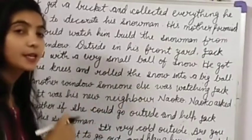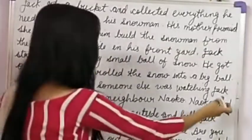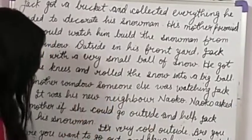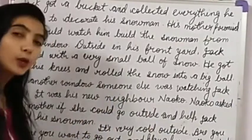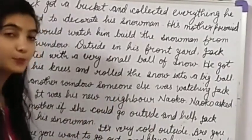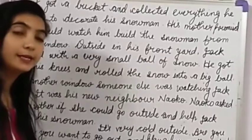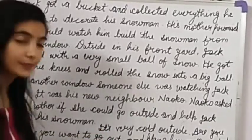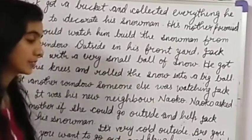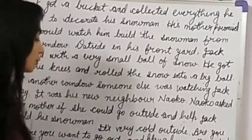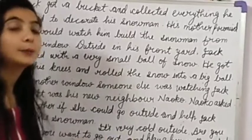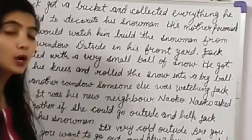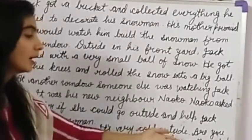Jack's new neighbor Naoko asked her mother if she could go outside and help Jack build his snowman. Naoko asked her mother: 'May I go outside and help Jack build his snowman?' Her mother said, 'It's very cold outside. Are you sure you want to go out and play?'